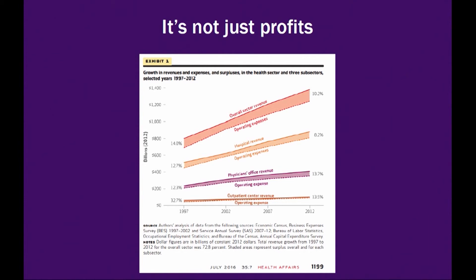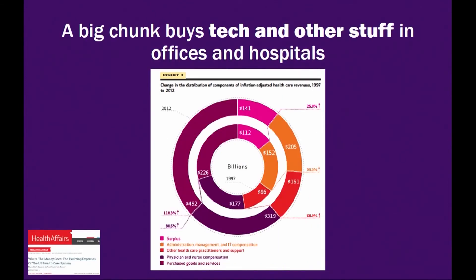It's a larger amount of money because the system is bigger, but the share that goes to profits hasn't moved in 20 years — it actually shrank a little bit in the late 1990s because of the Balanced Budget Act. A big chunk of the money buys new technology and other equipment and stuff for offices and hospitals. That amount of spending, inflation-adjusted, more than doubled over the period from 1997 to 2012.